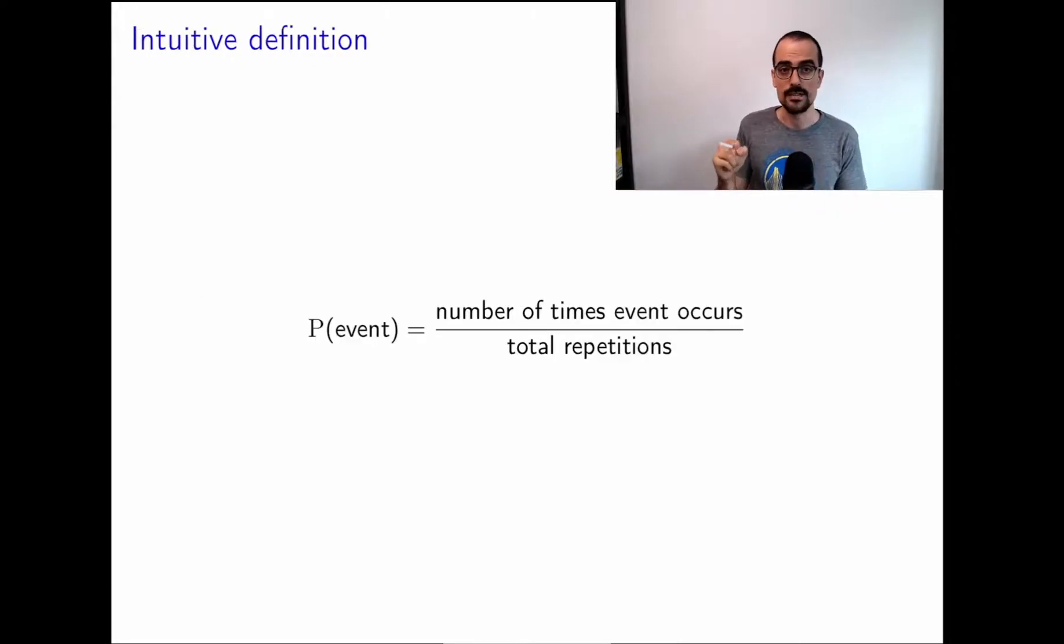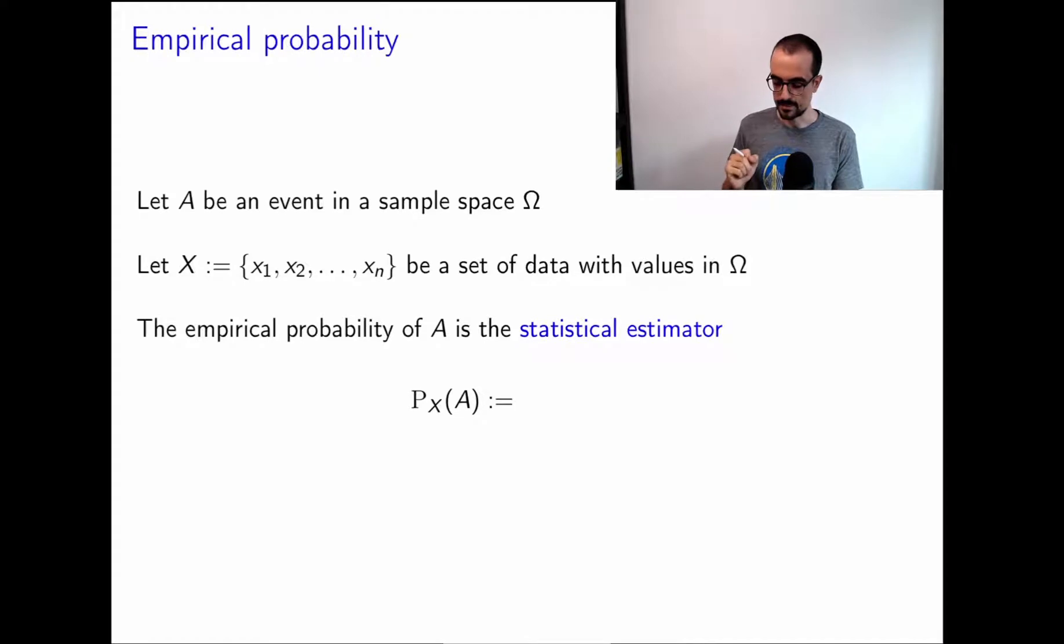Let's go back to our intuitive definition of probability, of the probability of an event. Our intuitive definition was: we're going to imagine that this uncertain phenomenon of interest is an experiment. It can be repeated many, many times. We're just going to compute the fraction of times that the event occurs of all the times that the experiment is repeated. So we're going to build upon that intuitive definition to define an estimator, a statistical estimator, of the probability of an event.